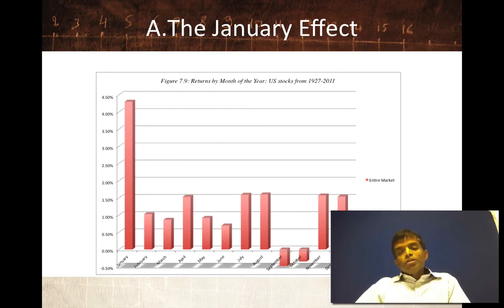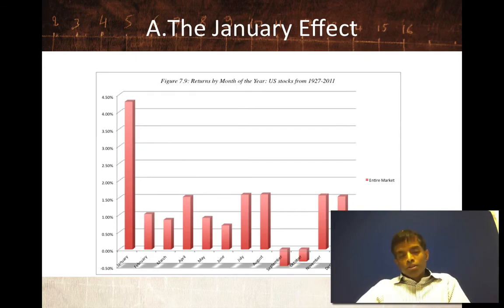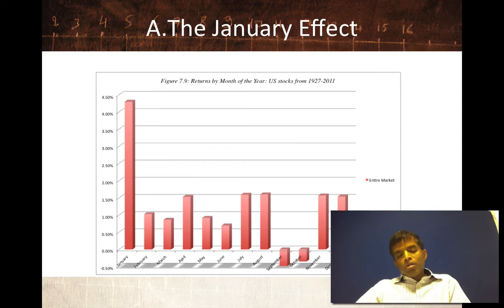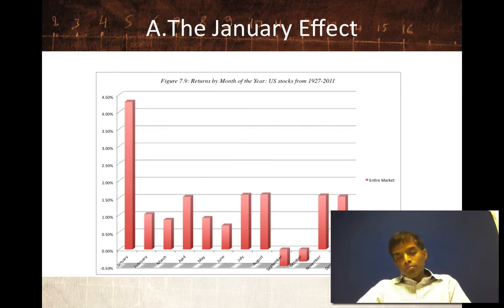Let's start with the January effect. This is a graph listing returns by month of the year from 1927 through 2011 for US stocks. By far, January is the best month of the year to invest in. There is some evidence of a drop-off in the middle of the year, and there's always talk of a summer swoon in stocks, but the two worst months for investing, at least over this very long time period, have been September and October — maybe because of the crashes in those months, especially October.